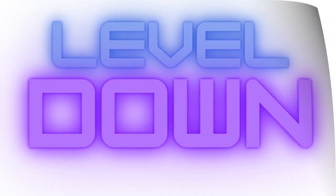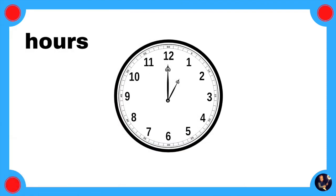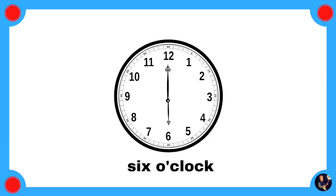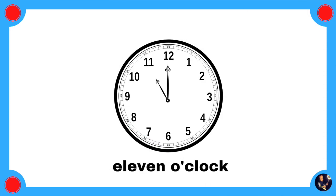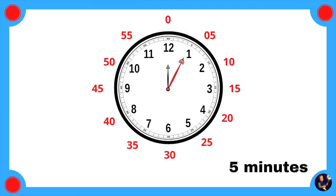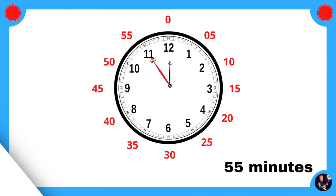Great job! Don't give up! Level down! Come on, get ready! 3, 2, 1. Hours: 1 o'clock, 2 o'clock, 3 o'clock, 4 o'clock, 5 o'clock, 6 o'clock, 7 o'clock, 8 o'clock, 9 o'clock, 10 o'clock, 11 o'clock, 12 o'clock. Minutes: 0 minutes, 5 minutes, 10 minutes, 15 minutes, 20 minutes, 25 minutes, 30 minutes, 35 minutes, 40 minutes, 45 minutes, 50 minutes, 55 minutes.